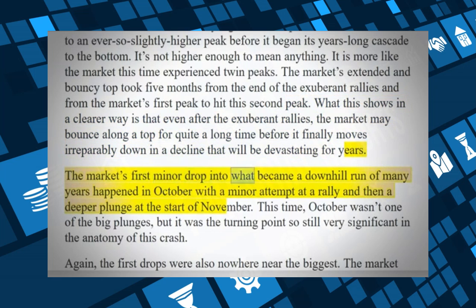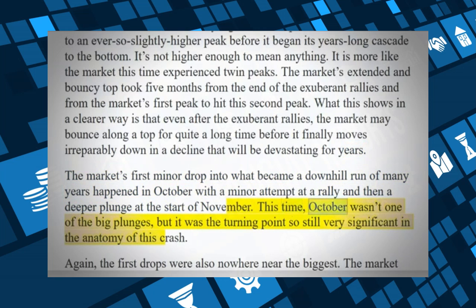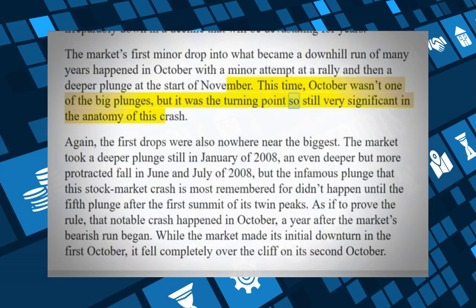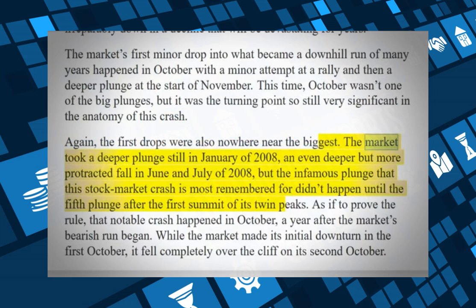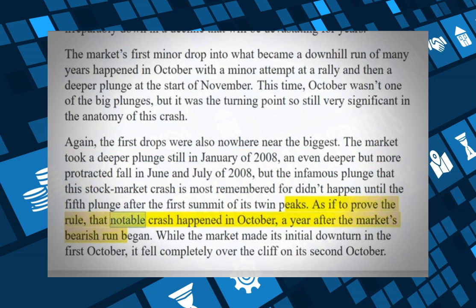The market's first minor drop into what became a downhill run happened in October, with a minor attempt at a rally and then a deeper plunge at the start of November. October wasn't one of the biggest plunges this time, but it was the turning point — still very significant. The market took a deeper plunge in January 2008, an even deeper but more protracted fall in June and July 2008, but the infamous plunge the crash is most remembered for didn't happen until the fifth plunge after the first summit of its twin peaks.